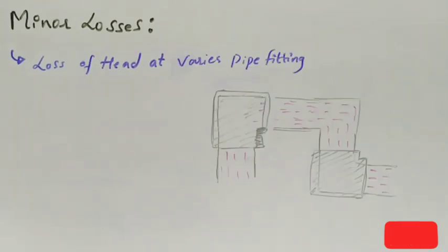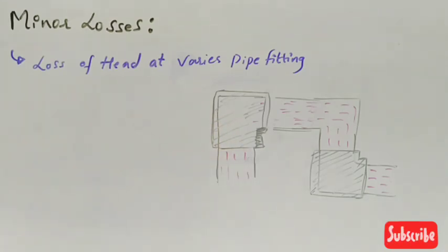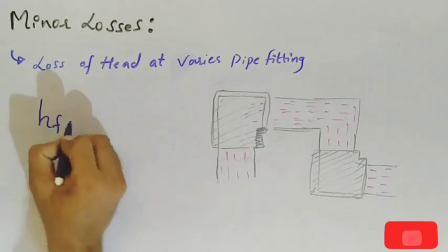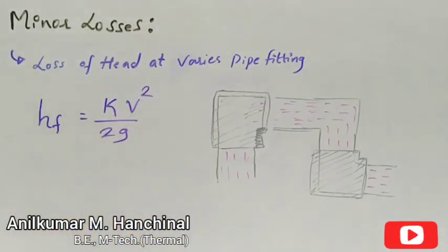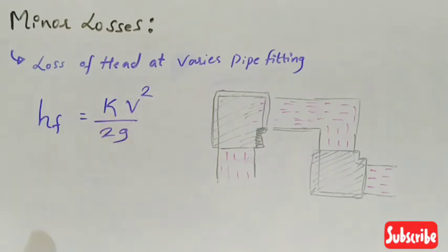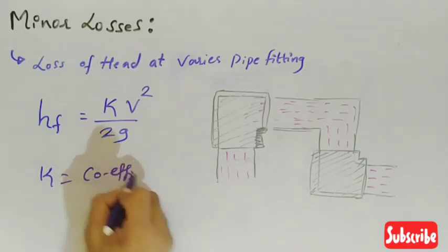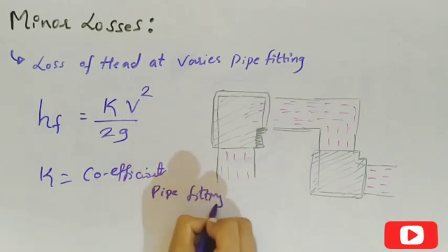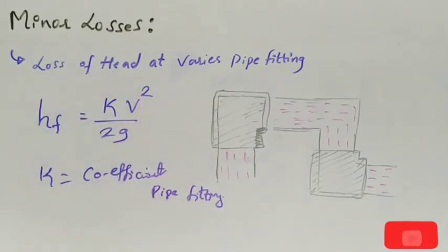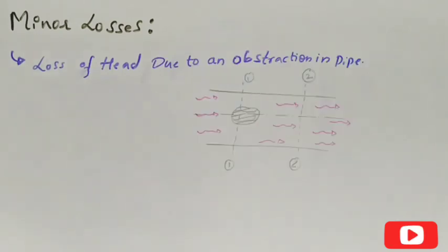The next type of minor losses are the loss of head at various pipe fittings. These losses are due to various pipe fitting arrangements such as valves, couplings, elbows, etc. This is denoted by h_f and is given by: h_f = k v² / 2g, which is similar to the losses due to pipe bends, where v is the velocity through the pipe arrangement, g is the gravitational constant, and k is the coefficient of pipe fitting. This equation is similar to that of head loss due to bends.